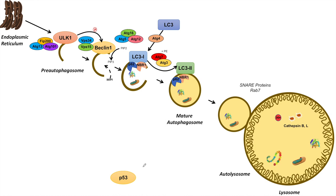The next transcription factor involved in upregulating macroautophagy is P53. We often talk about P53 in the context of stress and DNA damage. DNA damage can lead to activation of P53, which can then enter the nucleus and transcriptionally upregulate proteins in the macroautophagy pathway, including ATG4, ATG7, and ULK1.